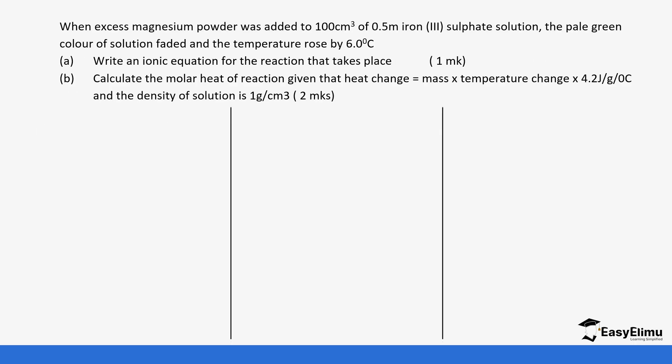So this is another example, we will do it together. So when excess magnesium powder is added to 100 cm³ of 0.5M iron(II) sulfate. So we have the mass of solution which is going to be 100 grams because it's 100 cm³. The pale green color solution faded and the temperature rose by 6°C. So the change in temperature is 6°C. So let's write an ionic equation for the reaction. So we know it's magnesium powder plus iron(II) sulfate to form magnesium sulfate plus iron solid.